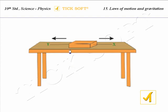Here, a wooden board is on the table. The x-axis and y-axis represent the directions of applied force. If we apply force along the x-axis, the board moves along the x-axis. If a force is applied along the y-axis, the board moves along the y-axis.